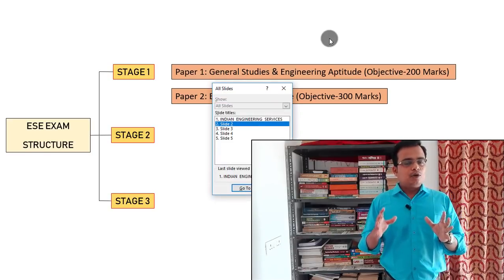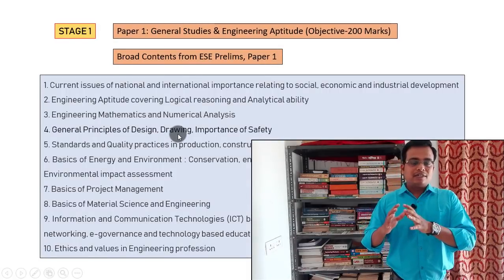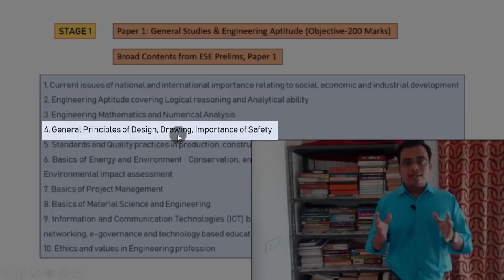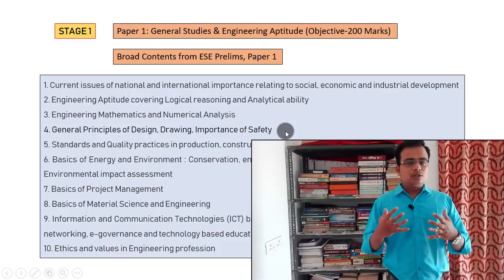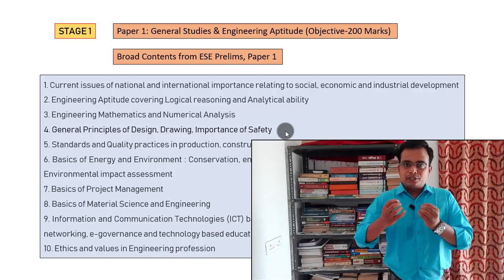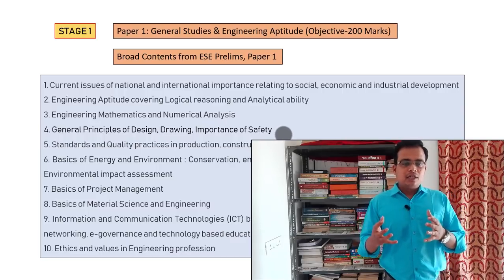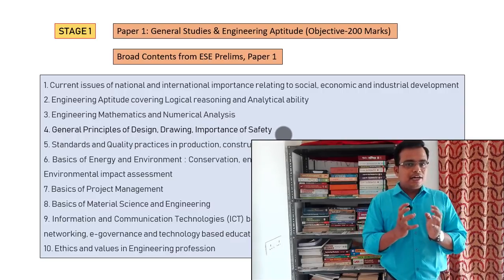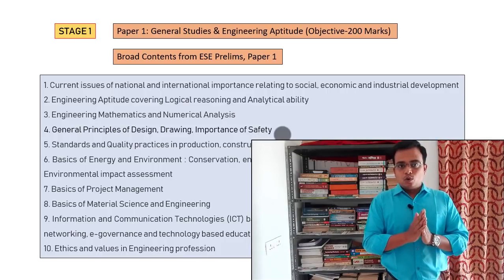In Paper 1 there are broadly ten topics, and I'll be focusing on the fourth topic, which is associated with technical drawing or engineering drawing. I'll put up as many videos as possible and show you how to deal with objective problems associated with projection of solids, projection of planes, and conic sections — problems that directly fall in Paper 1 prelims.